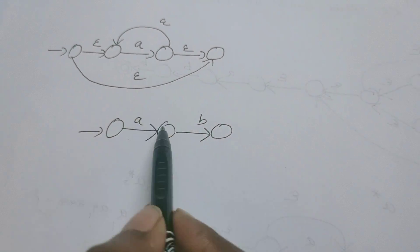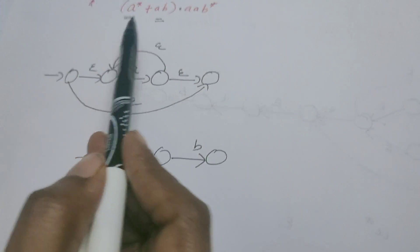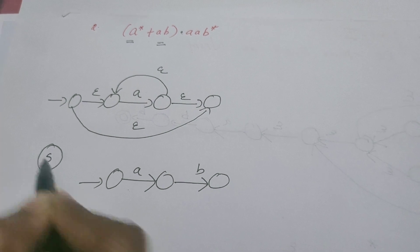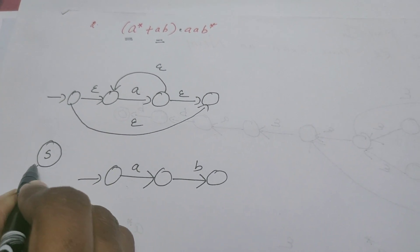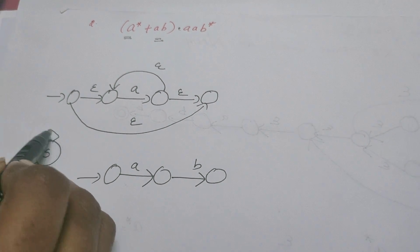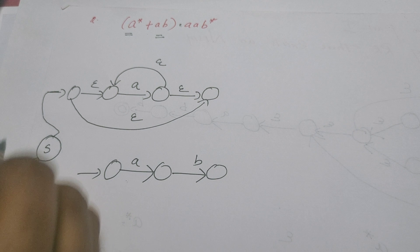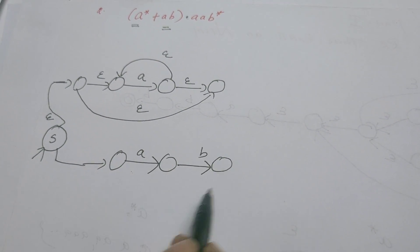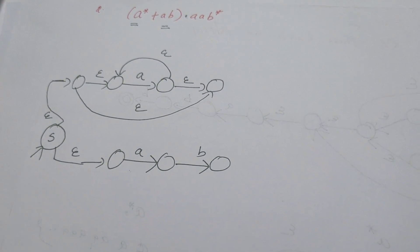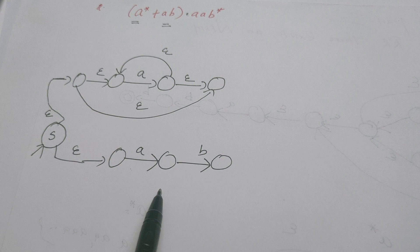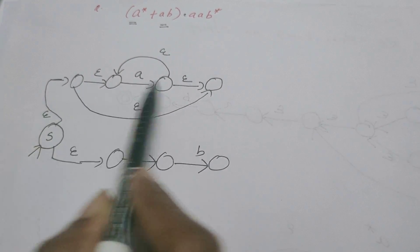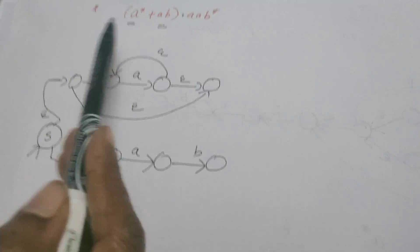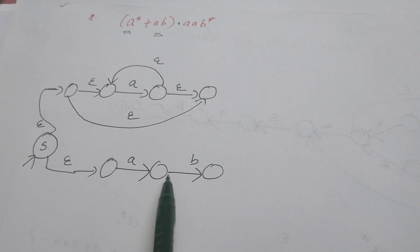Now these two machines should be converted so as to recognize a* union ab. I need to take a new start state — call it S. This new start state is connected to the start state of the a* machine via epsilon, and to the start state of the ab machine via epsilon. As of now the machine accepts either a* or ab from the start state, which is exactly what the union operator means.